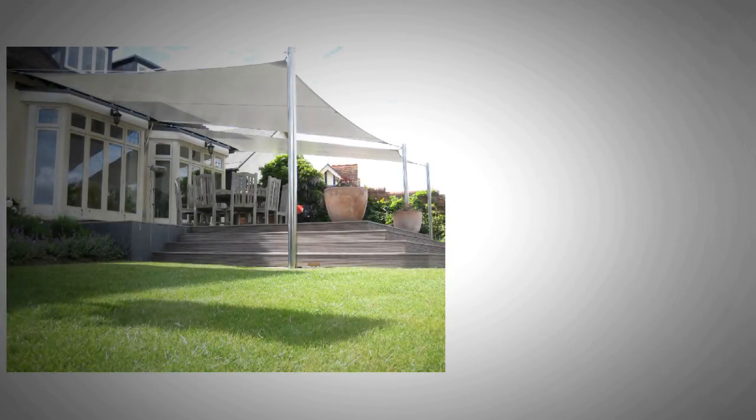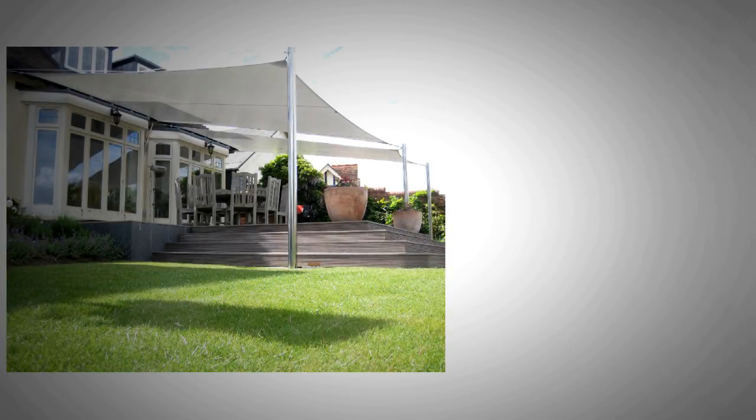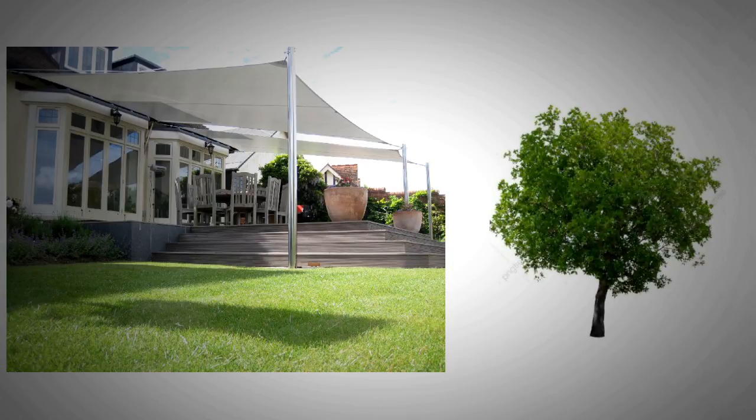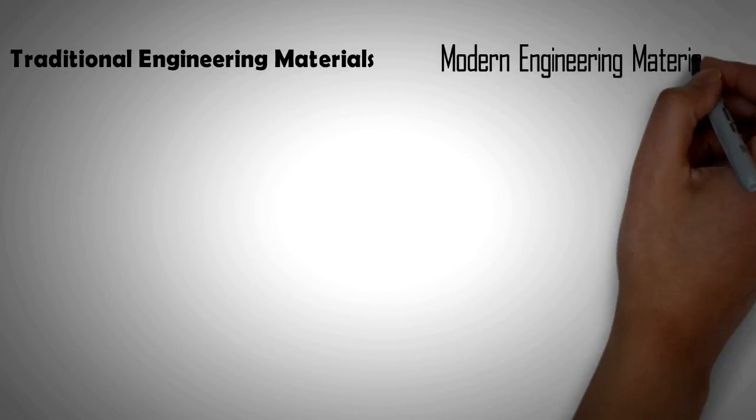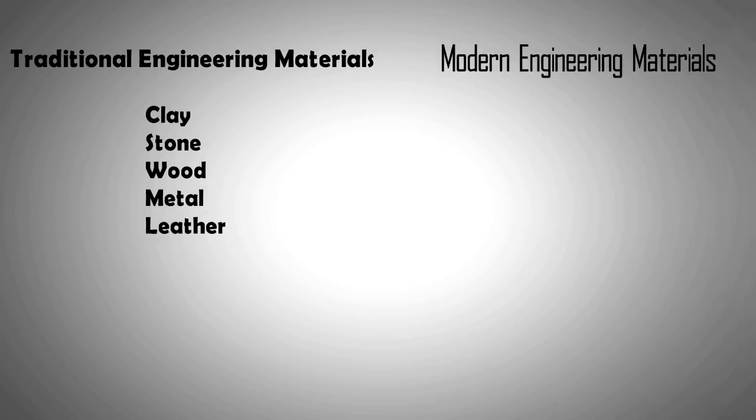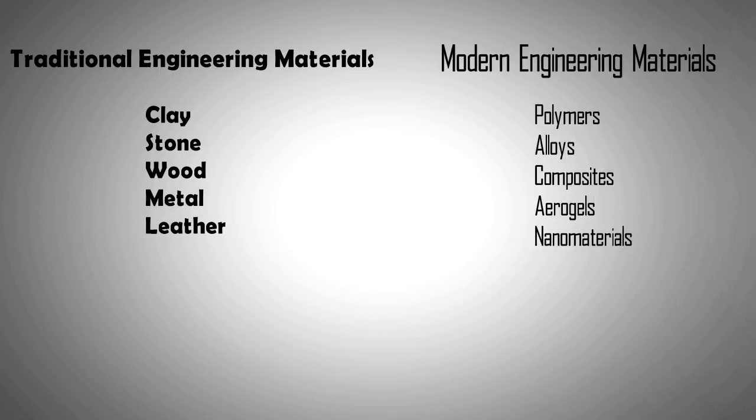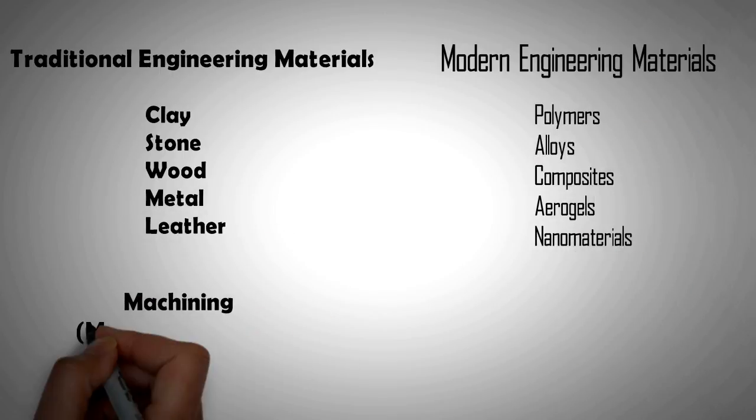If we look around us, the way we have traditionally designed our products, they look quite different to how nature has designed something with similar functions. Our design ability in the past has been limited by both the available materials and the manufacturing processes to shape them. It is also dictated by our memory of shapes that have worked for us in the past.